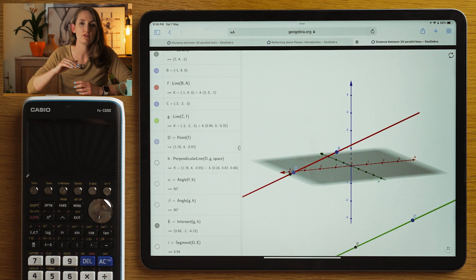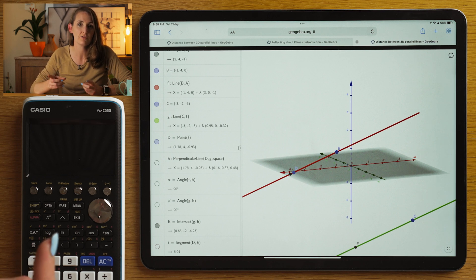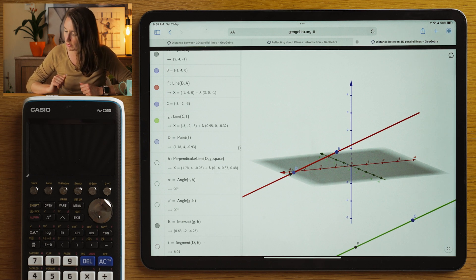The tricky thing is because these two lines are parallel, they're going to have the same direction vector. So normally if we had two different lines, we could find a line that would be perpendicular to both of them by using the cross product.